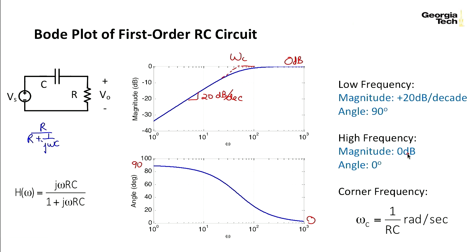High frequency has magnitude of 0 dB, angle of 0 degrees. And the corner frequency is defined the same way as it was before, 1 over RC.